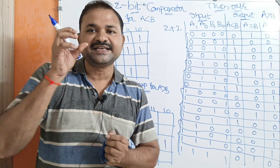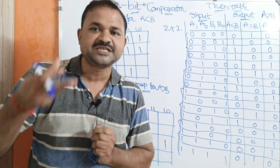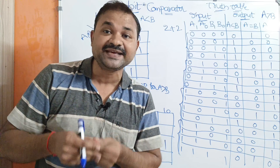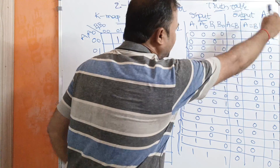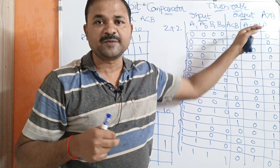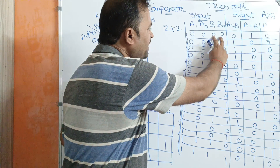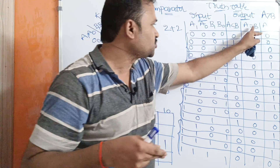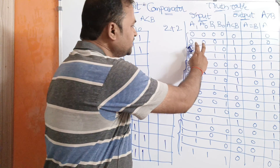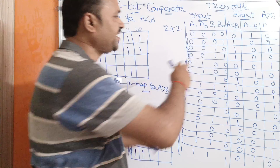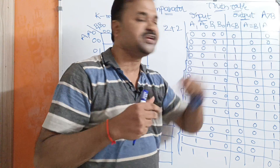Here 0,0 means decimal number 0; 0,1 means decimal number 1; 1,0 means decimal number 2; 1,1 means decimal number 3. We have three output columns: first column represents A less than B, second column represents A equal to B, third column represents A greater than B. For the first combination, both A and B are 0,0, so both equal 0 — so A equal to B output is 1, while A less than B and A greater than B outputs are 0. For the second combination, A is 0,0 (decimal 0) and B is 0,1 (decimal 1), so A is less than B, giving A less than B output as 1, with remaining two outputs as 0.